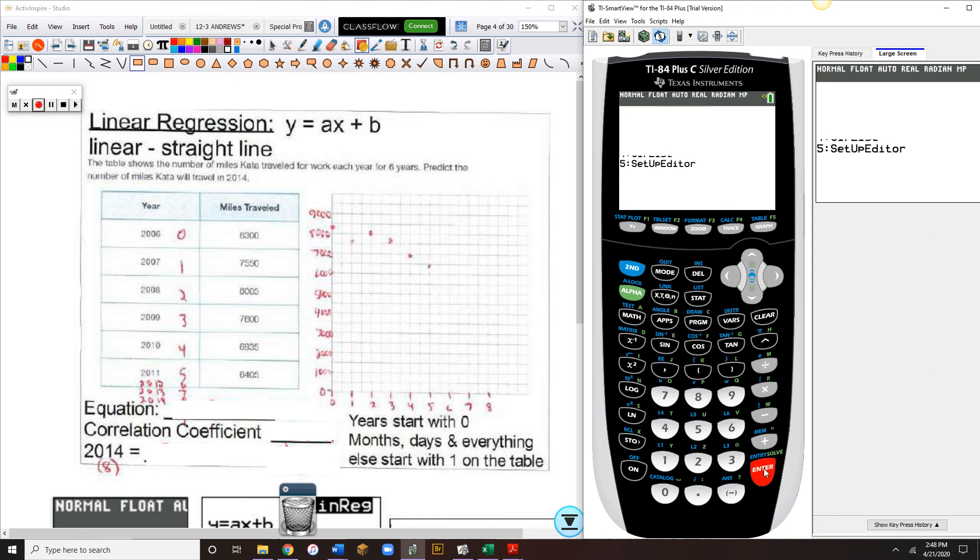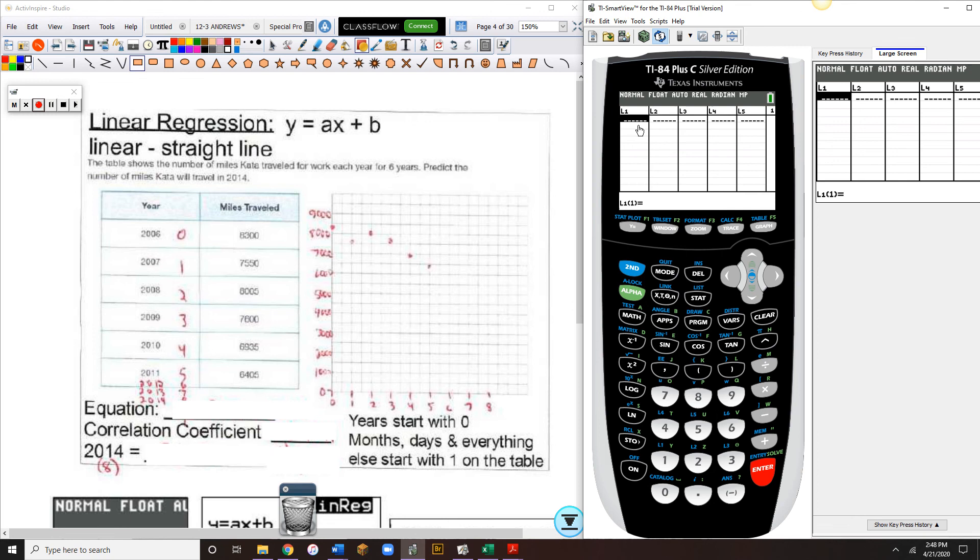So stat, edit, and we've got our L1 and our L2. Now, 2006 is a year. We do not put 2006 in our L1, because it's a year. It's like days of the week or months of the year. We treat that as kind of like a word. Instead, 2006 will represent year 0, 1, 2, 3, 4, and 5.